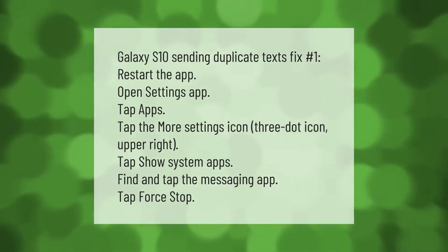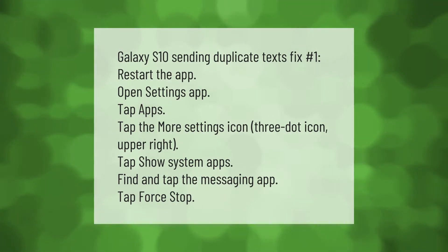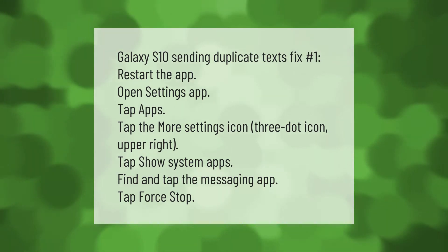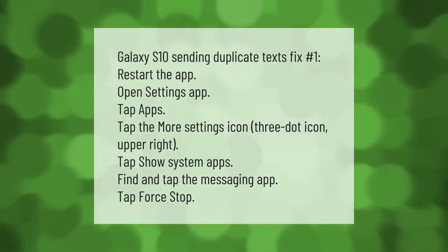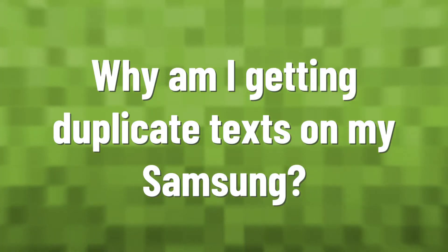Galaxy S10 sending duplicate texts fix number one: restart the app. Open Settings, tap Apps, tap the three-dot icon in the upper right, tap Show System Apps. Find and tap the Messaging app, then tap Force Stop.